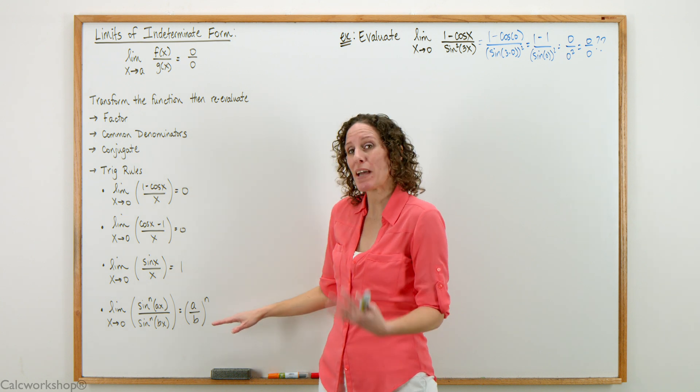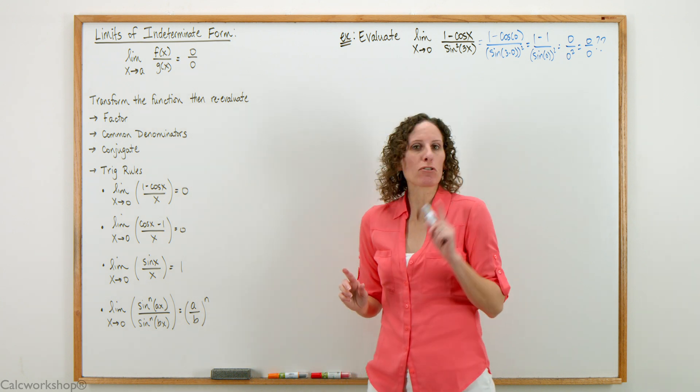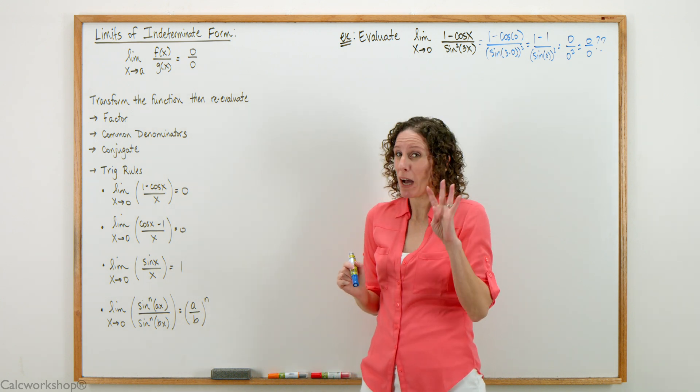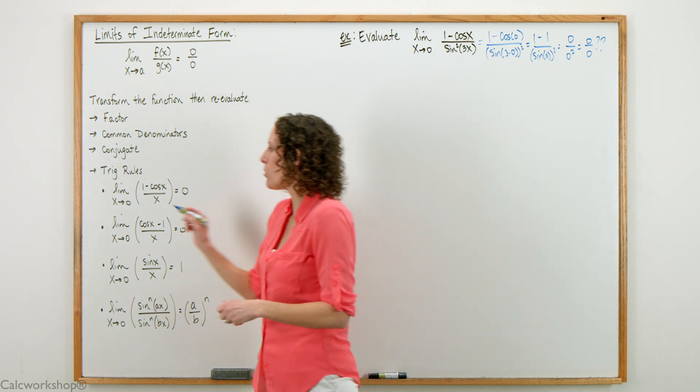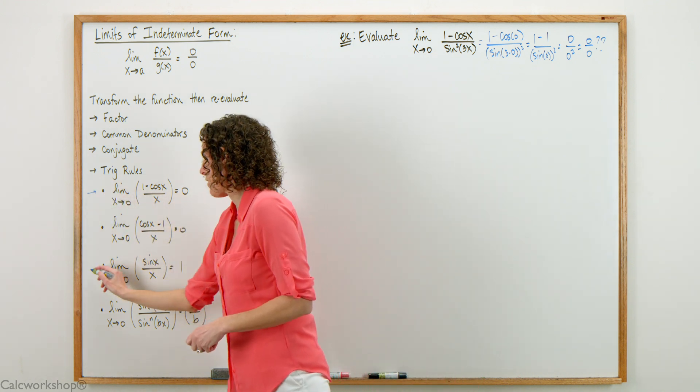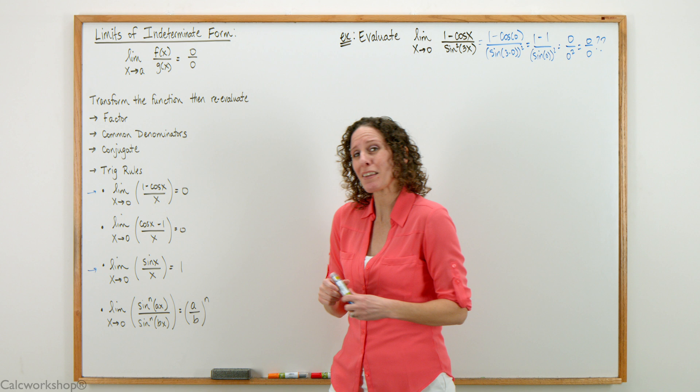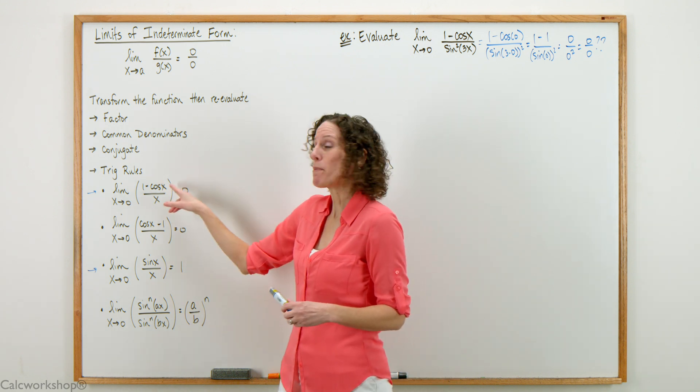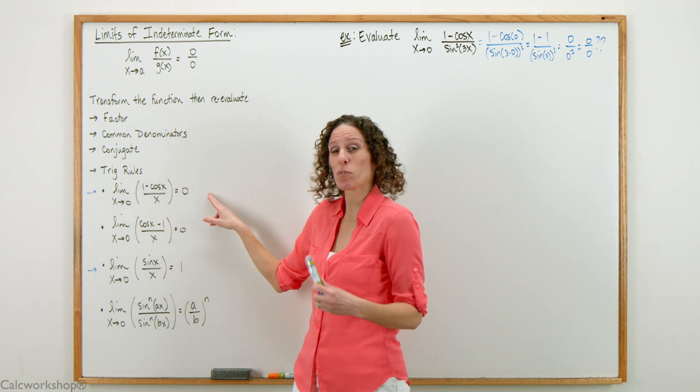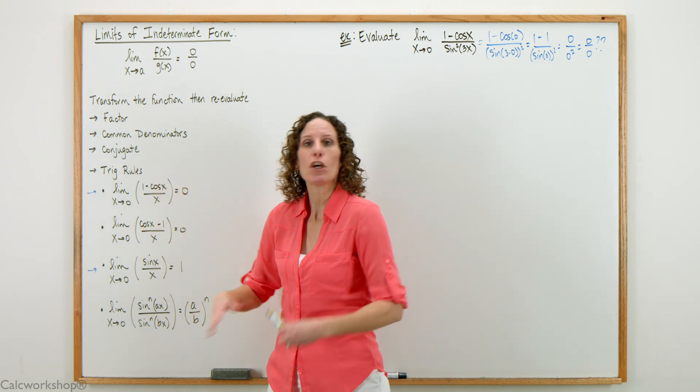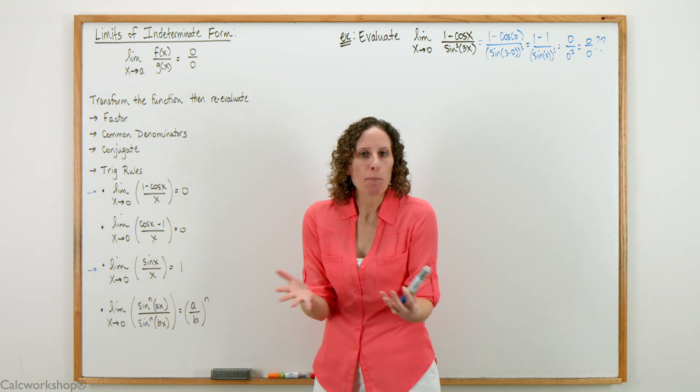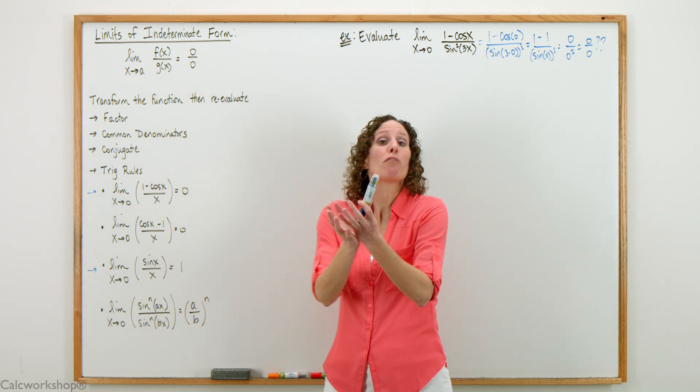These are the trig rules we have to know. Most professors and textbooks only give you two, I'm going to give you four. Most textbooks give you the first one, the limit as x approaches 0 of 1 minus cosine x divided by x equals 0. Whenever you see this type of function, that portion equals 0.